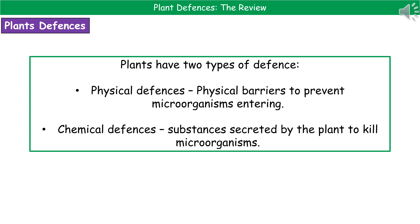Welcome to our review on plant defences. The first thing we need to know is that plants don't just have one type of defense mechanism — they've got two types. The first is a physical defense, which are the physical barriers that prevent microorganisms from entering in the first place, and the second are the chemical defenses, which are substances that the plant secretes to kill any microorganisms that have got past those initial physical defenses.